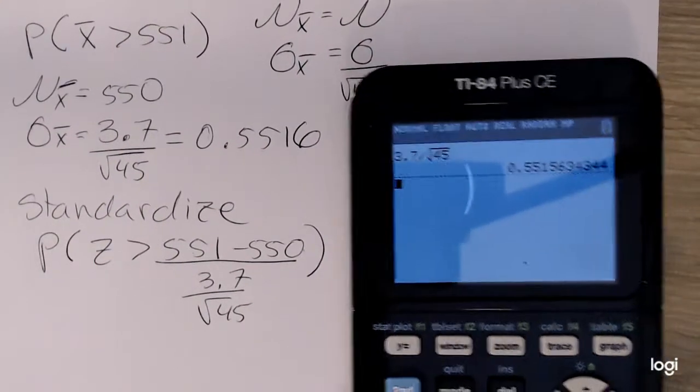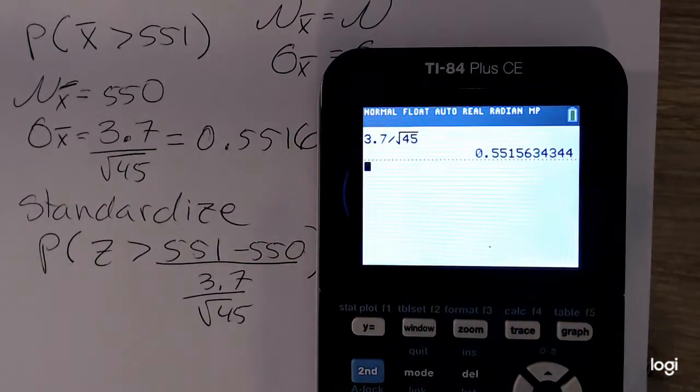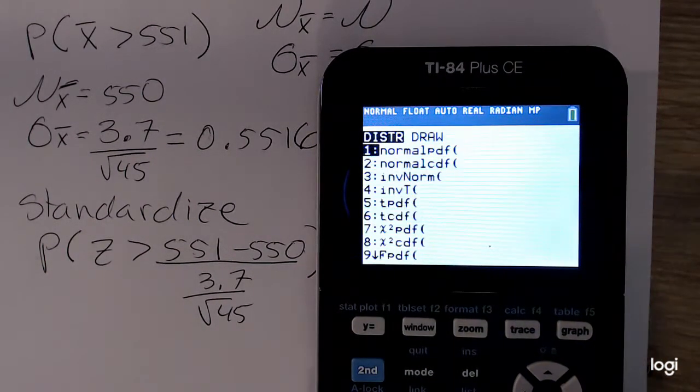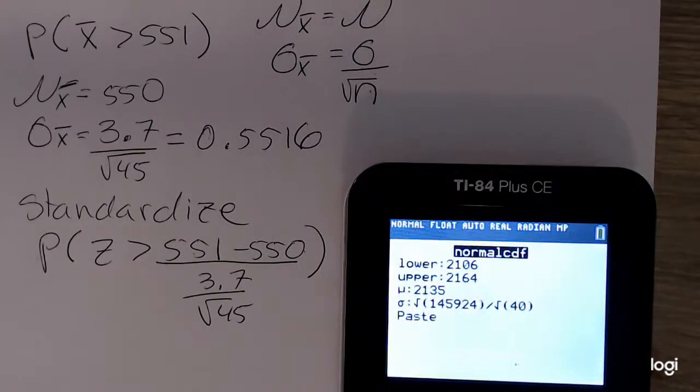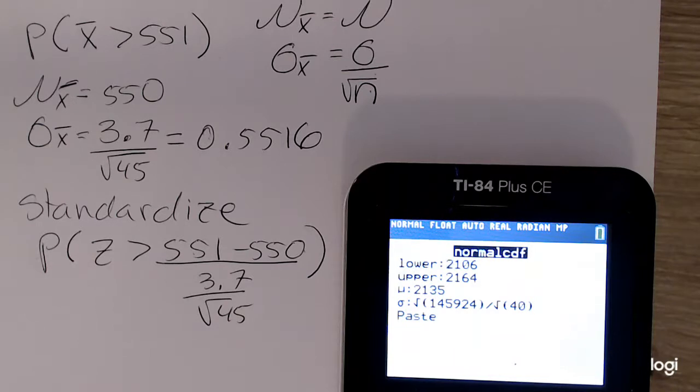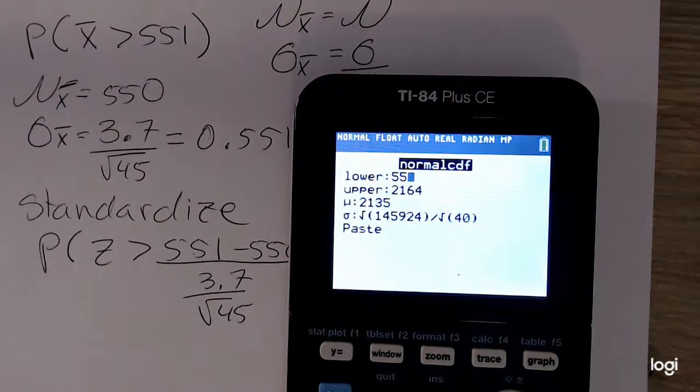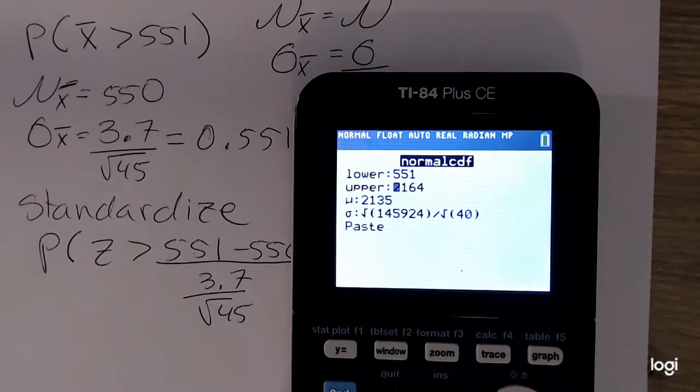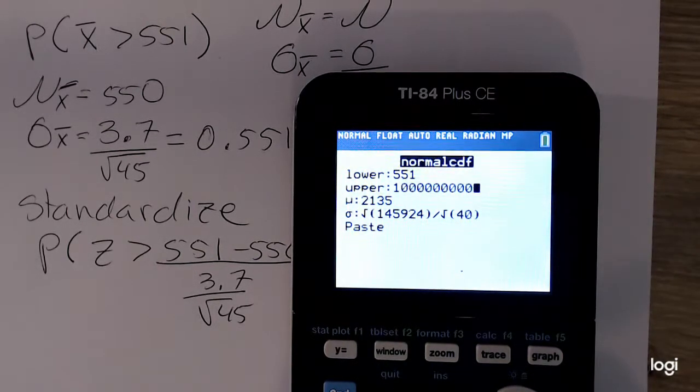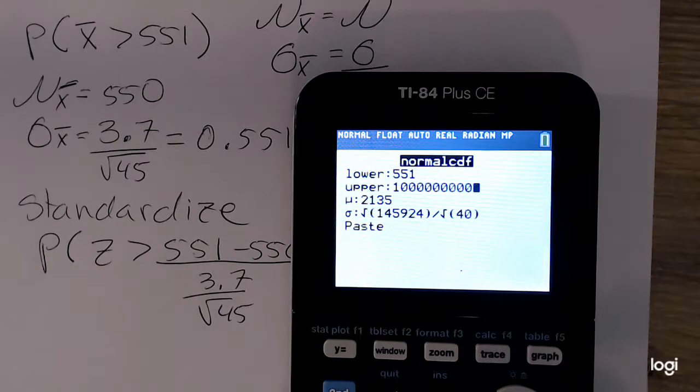Okay, so going to the normal CDF, under my distribution menu, my lower bound in this case is 551. My upper bound is a very large number. So, I'm going to put a 1 in a bunch of 0's. Okay, theoretically it's going to positive infinity, but there is no positive infinity button.